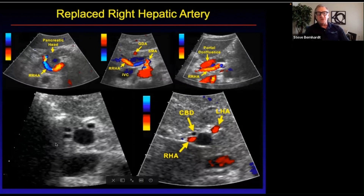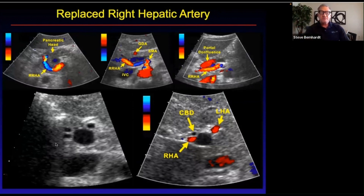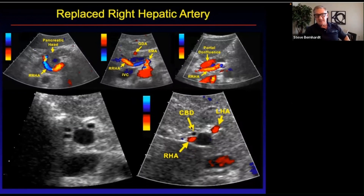Strangely enough, when you have both a replaced left and right hepatic artery — and this is labeled wrong here, this is not the common bile duct, this is the common hepatic duct because we're up in the liver — you see we've got three structures. Mickey has three ears. One is the duct and the other two are the arteries, which is an unusual arrangement.